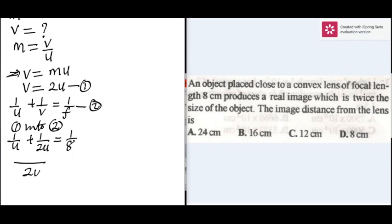The denominator is 2u. This becomes 2 plus 1 equals 1 over 8. Making u the subject of the formula, we have 3 times 8 all over 2, because 2 plus 1 is 3. That gives us u equals 12cm.